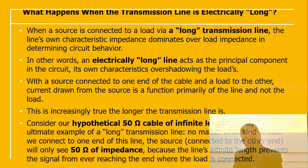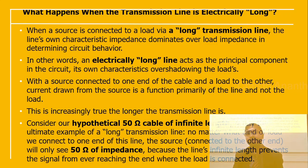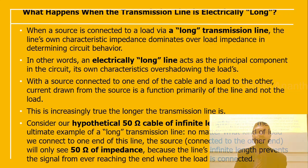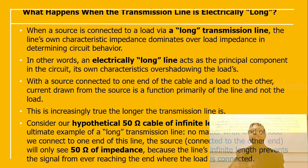With the source connected to one end of the cable and the load to the other, the current drawn from the source is primarily a function of the line, not the load. This is even more true the longer the transmission line is. Consider a hypothetical 50 ohm cable of infinite length — no matter what load is connected, the source will only see 50 ohm impedance because the line's infinite length prevents the signal from ever reaching the load.